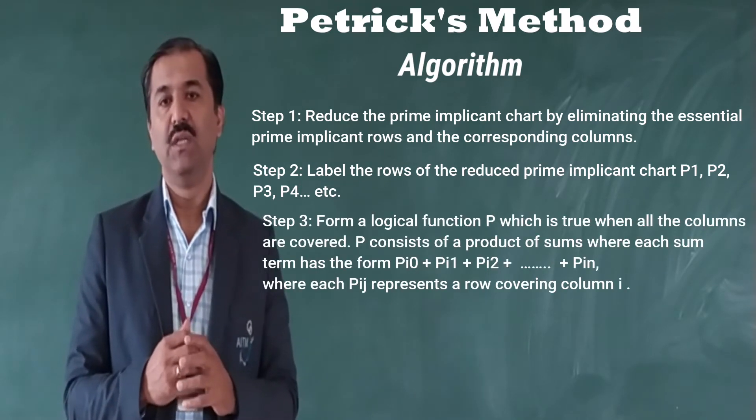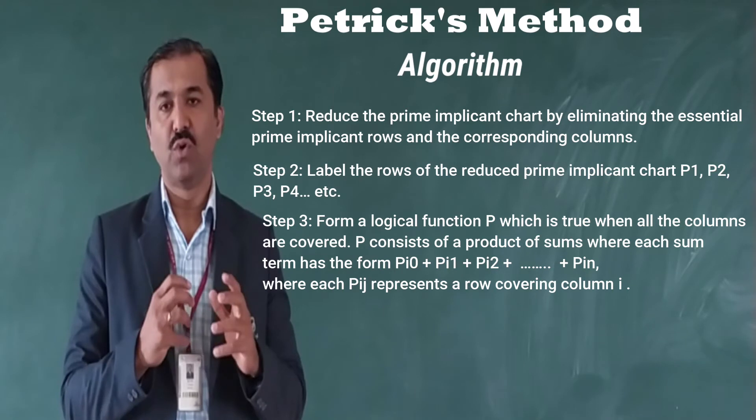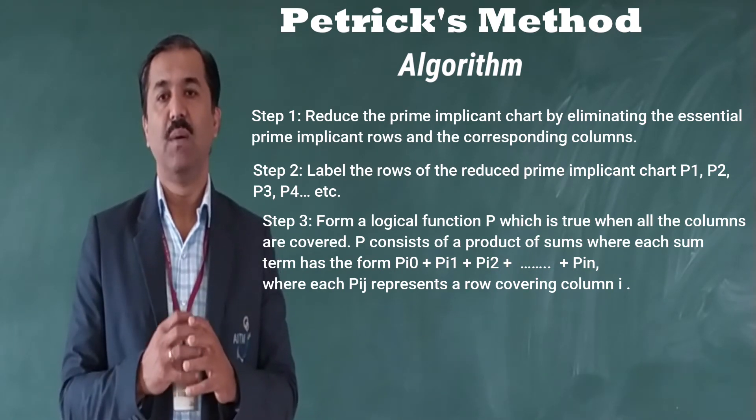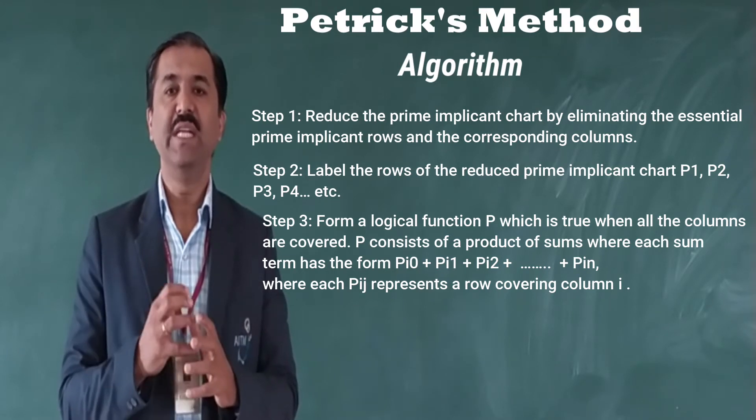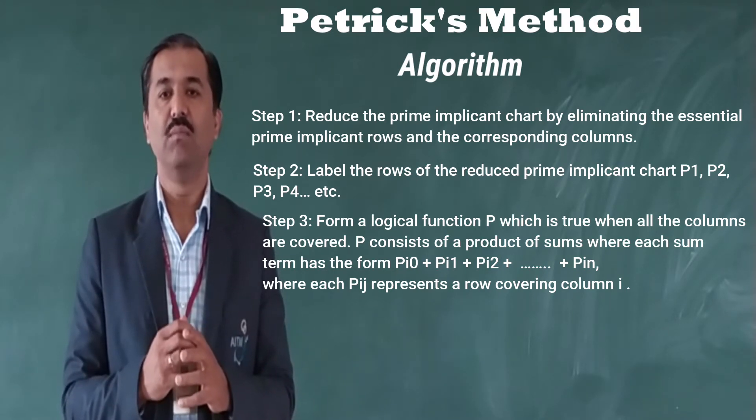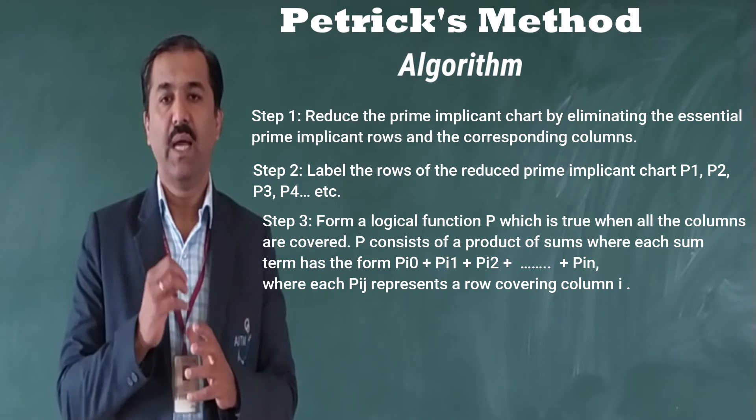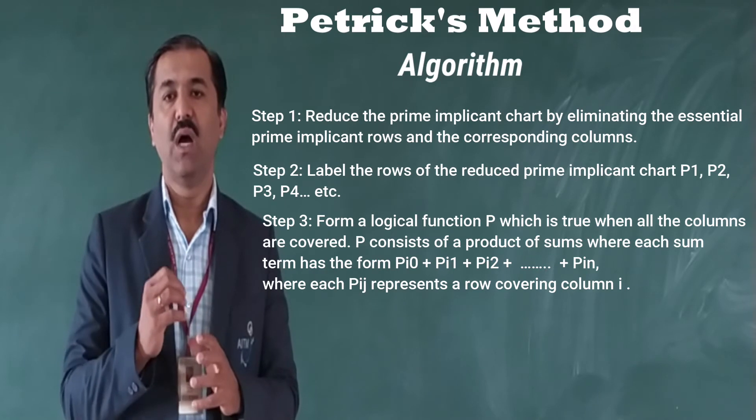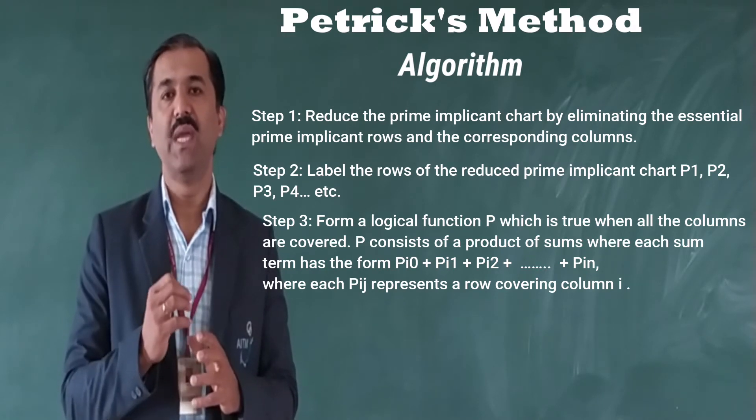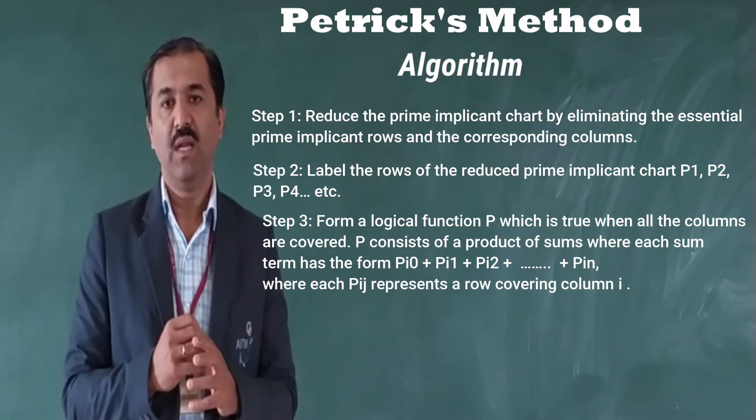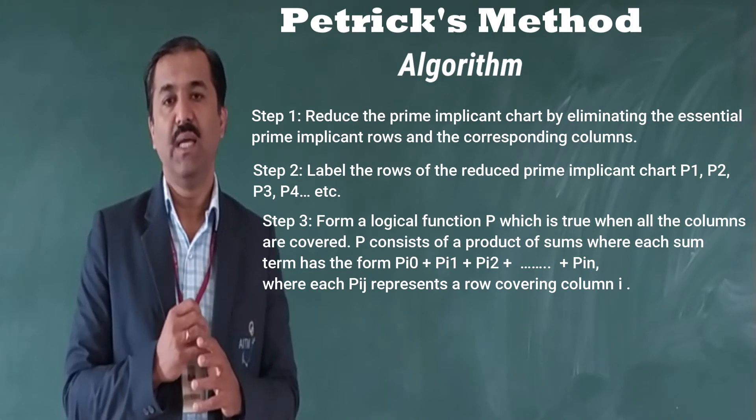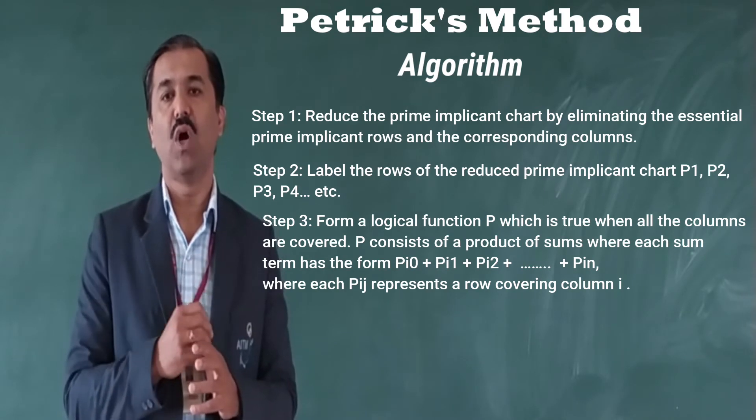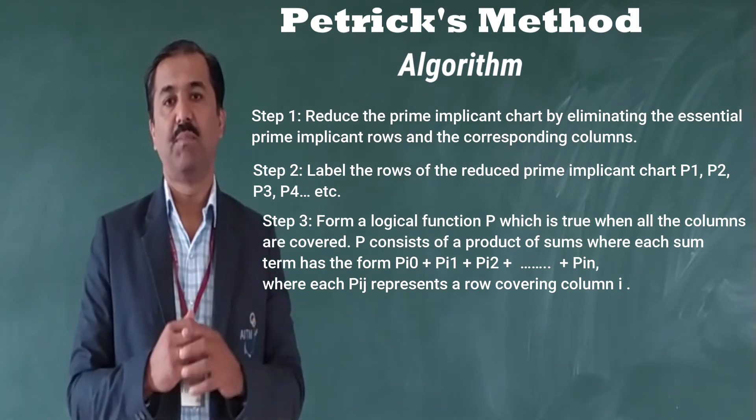Form a logical function P which is true when all the columns are covered. P consists of a product of sum where each sum term has the form P_i0 + P_i1 + P_i2 and so on up to P_im, where each P_ij corresponds or represents a row covering column i. This is step number 3.